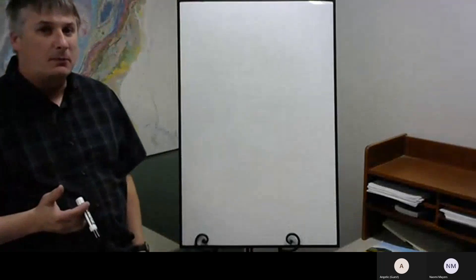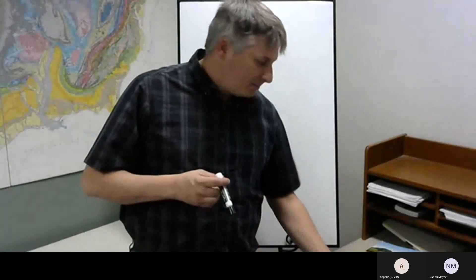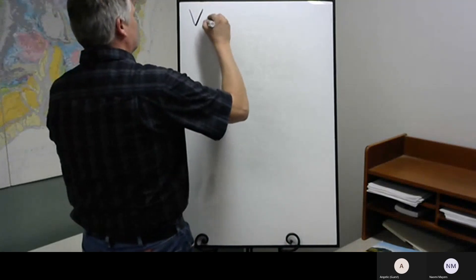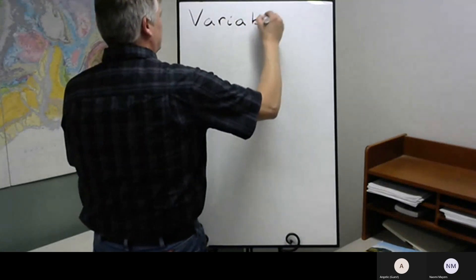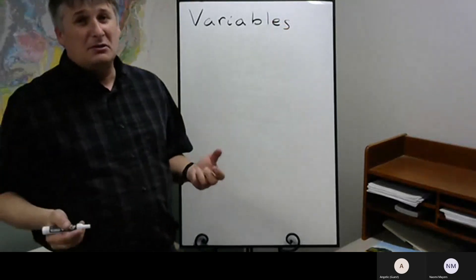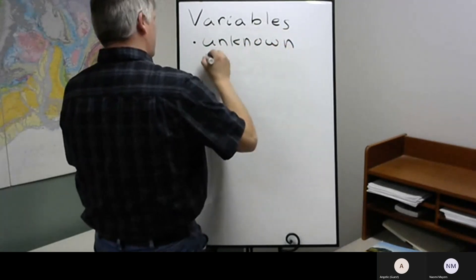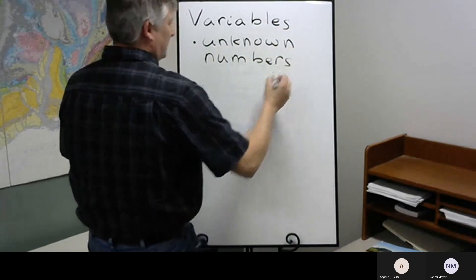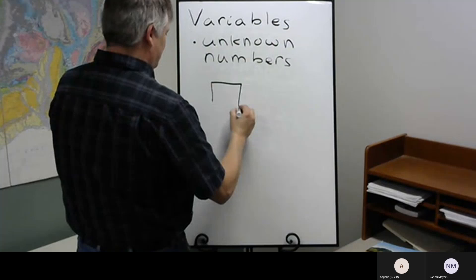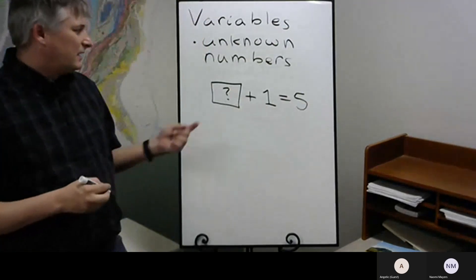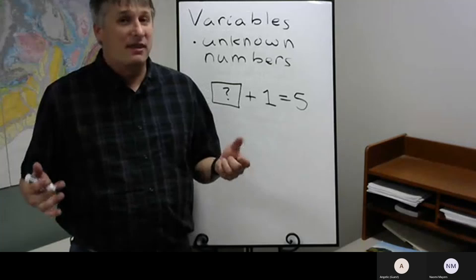What we're looking at today is section 9.1. We're solving for variables, and we've been sort of dancing around this the whole time. First off, what are variables? Variables are unknown numbers. If you have something like this unidentified number, that's a variable.